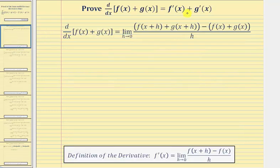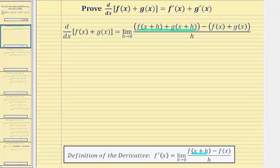So to begin our proof, we want to apply the limit definition of the derivative for f of x plus g of x. Looking at the definition below, first we have the function value when the input is x plus h, which in our case, because we have a sum of two functions, would be f of the quantity x plus h plus g of the quantity x plus h. Then we want to subtract the function value when the input is x, which in our case would be minus the quantity f of x plus g of x.